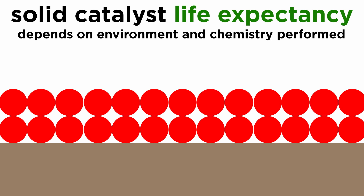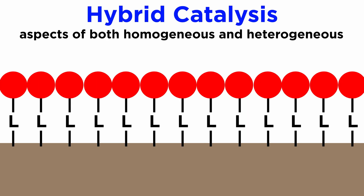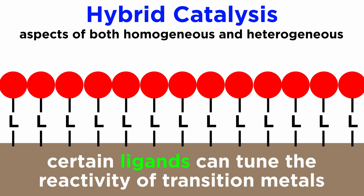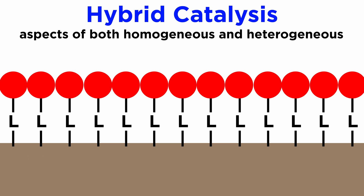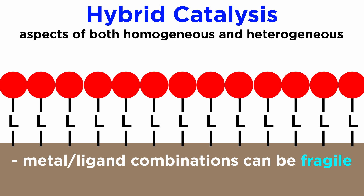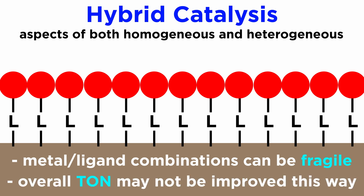Given the importance of heterogeneous catalysis, the construction of improved catalytic surfaces is a very important area of research. A popular area is a hybrid with homogeneous catalysis. We have seen that ligands can tune the reactivity of transition metals, leading to highly selective processes under mild conditions, and sometimes even highly enantioselective processes if the ligands are chiral. A way to combine the two areas is to covalently link these ligands to a solid support so that the catalyst can easily be recycled at the end. However, the fragility of many metal-ligand combinations seen in homogeneous catalysts extends to the immobilized versions, and often the overall turnover number is not improved by attaching the ligands to the solid supports.